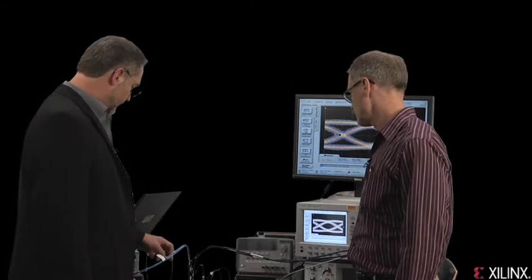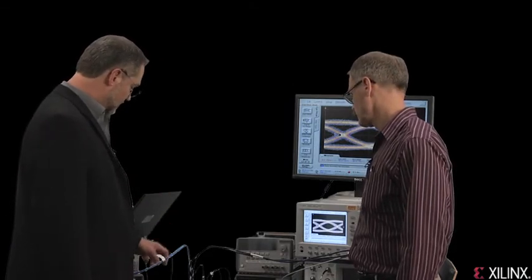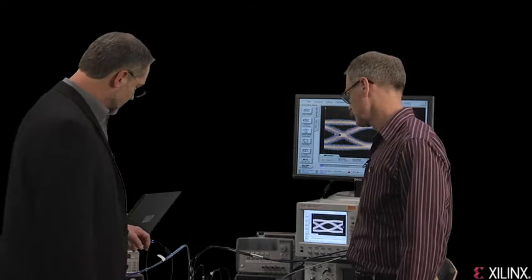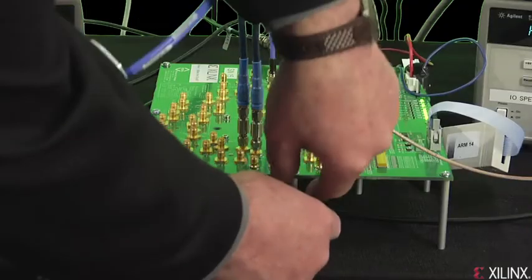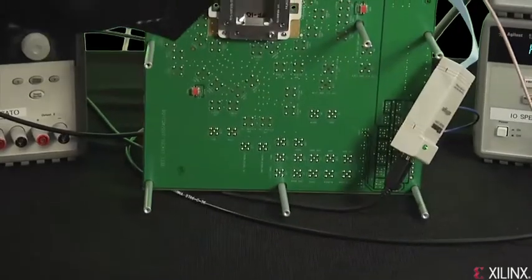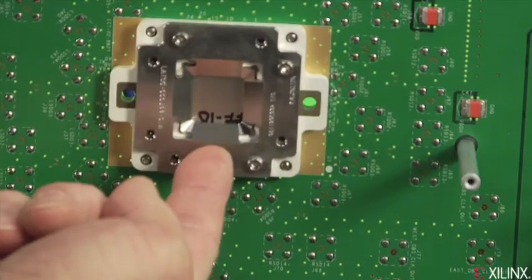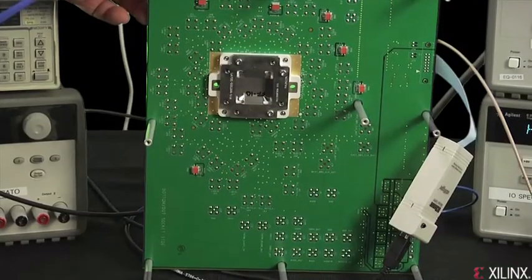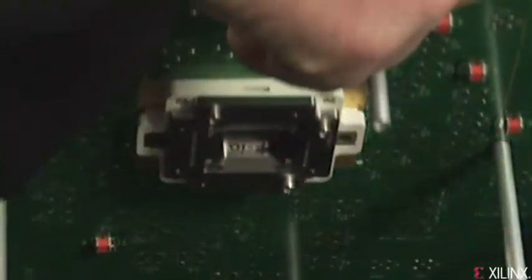And then the chip itself looks like it's on the bottom side of this board. So let me pick the board up so we can see that. That appears to be an ordinary BGA package. That's right, with one millimeter pitch spacing. So it's the same spacing as you've had on previous products.